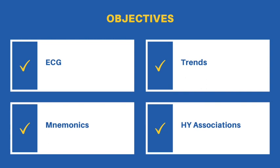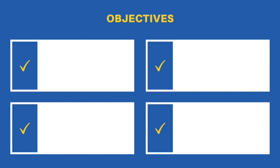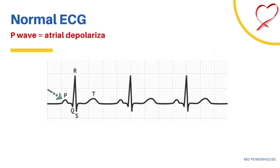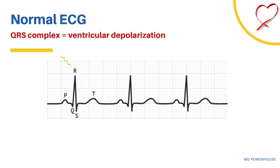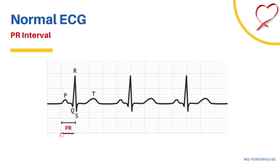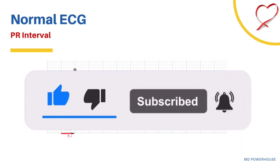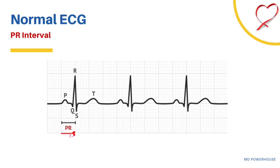Before we look at the AV blocks, let's first look at a normal ECG. On a normal ECG, you will see a P wave followed by a QRS complex, and then finally a T wave. The P wave represents atrial depolarization, while the QRS complex represents ventricular depolarization. The key aspect of an ECG that we must know to understand AV blocks is the PR interval, which reflects conduction through the AV node. An AV block is a slowed or blocked conduction between the atria and the ventricle.